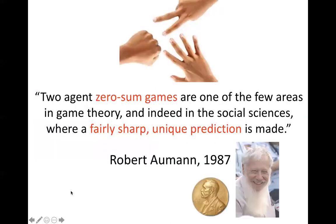Despite this recent interest, zero-sum game theory predates machine learning by many decades, and from the perspective of economics this is an area considered effectively solved. As Nobel-winning economist Robert Aumann noted, economists consider zero-sum games one of the great successes of game theory — a domain in the social sciences where a very sharp and unique prediction is made: the notion of a Nash equilibrium. Let's understand this from the perspective of an example.